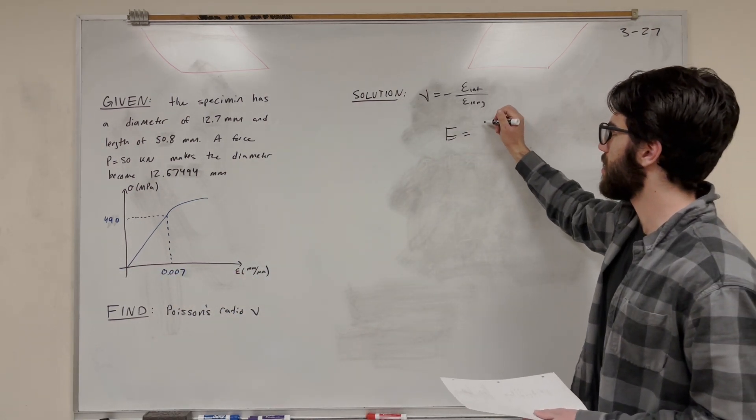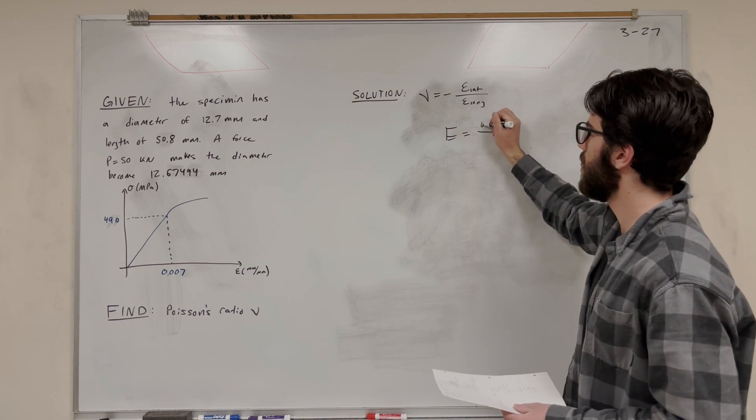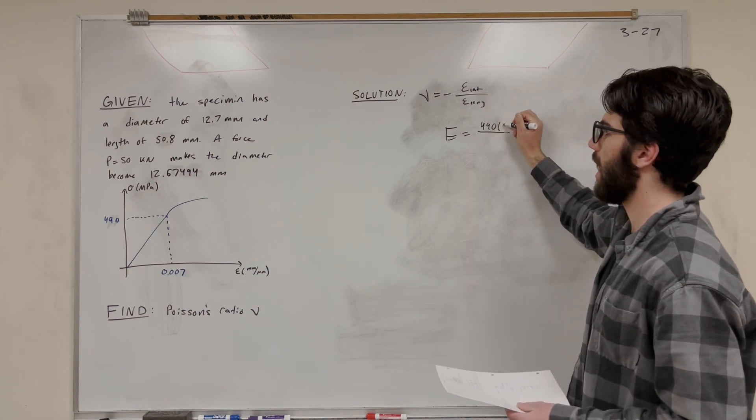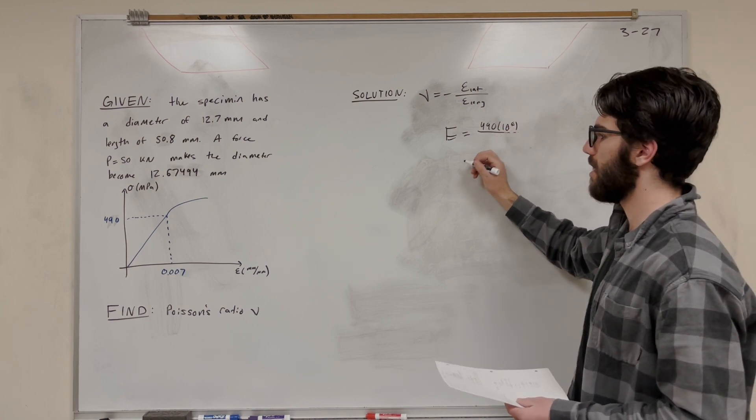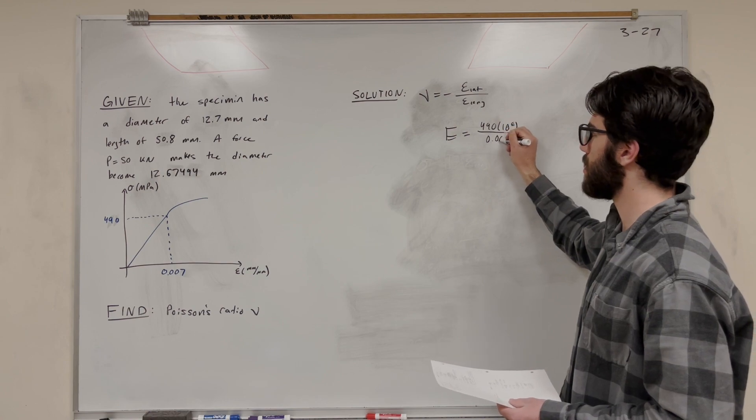So if you want to find the slope, obviously, we just need to do rise over run. It starts at the origin, so we can just do 490 times 10 to the 6th for that megapascals, and then divide it by 0.007.